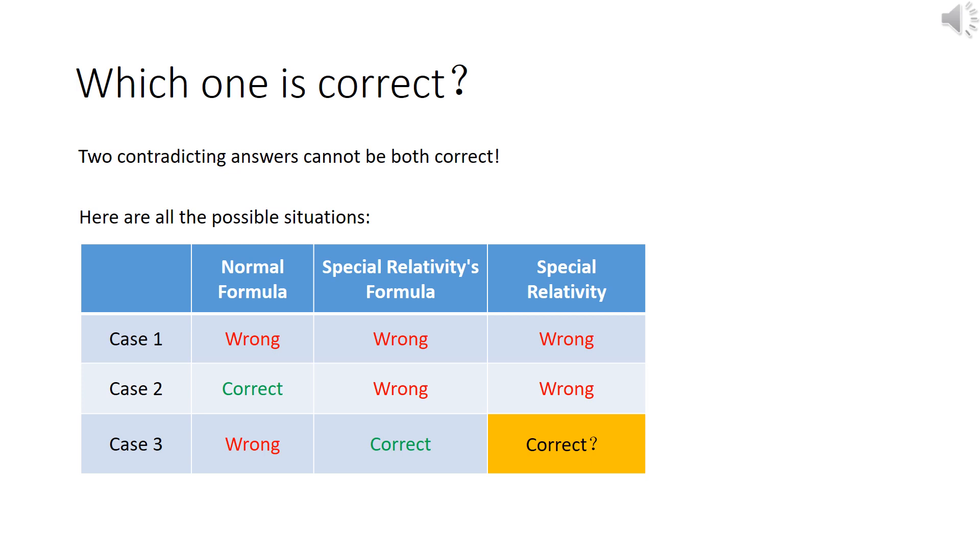On the other hand, why is there a question mark added to case three? Would there be a case where special relativity might still be wrong?